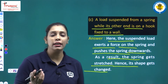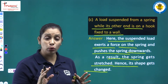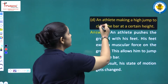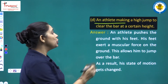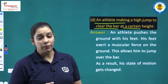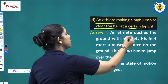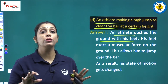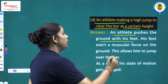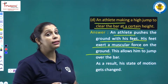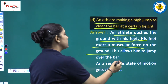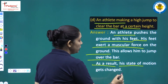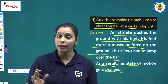Always remember the type of force and where it is exerting. Fourth case: an athlete making a high jump to clear the bar at a certain height. The athlete pushes the ground with his feet, applying muscular force on the ground. His feet exert a muscular force on the ground, which allows him to jump over the bar. As a result, his state of motion gets changed.